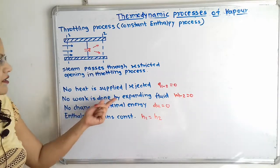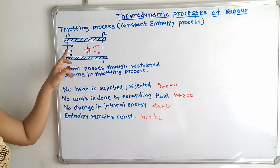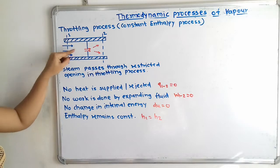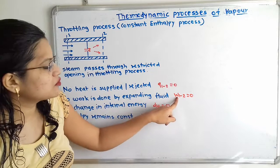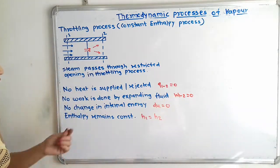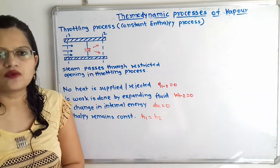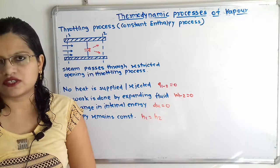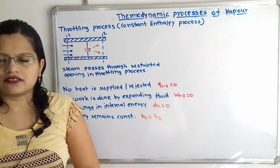Second, no work done by expanding fluid. No work is done when the steam is passing from point 1 to point 2. During the process 1 to 2, W1-2 is equal to 0. Third, no change in internal energy — U2 minus U1, that is ΔU, is equal to 0. So here no change in internal energy occurs.